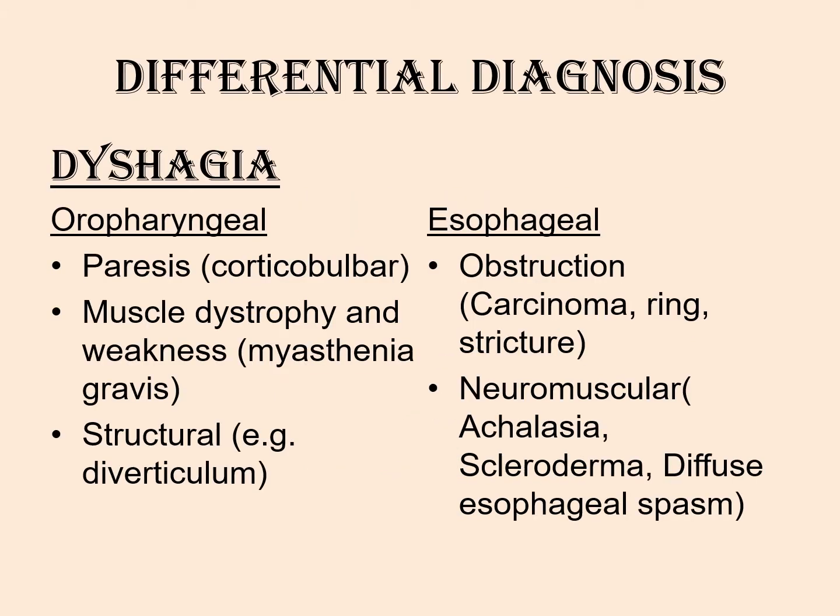The differential diagnosis for dysphagia could be oropharyngeal problems — that is paresis, muscle dystrophy, or structural problems. Esophageal causes could be obstruction or neuromuscular. Obstruction could be due to a stricture, ring, or carcinoma. Neuromuscular problems include achalasia, scleroderma, and diffuse esophageal spasm.